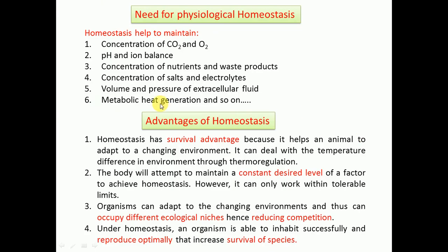What is the need for physiological homeostasis? Physiological homeostasis helps to maintain the concentration of carbon dioxide and oxygen in the body, pH and ion balance, concentration of nutrients and waste products, concentration of salt and electrolytes, volume and pressure of extracellular fluids, and metabolic heat generation.